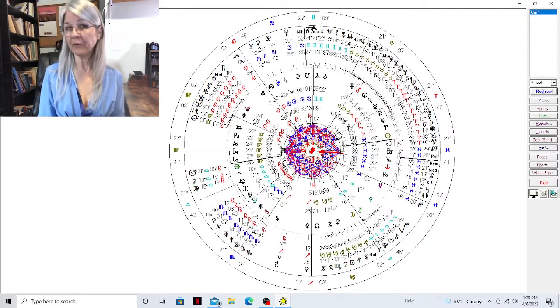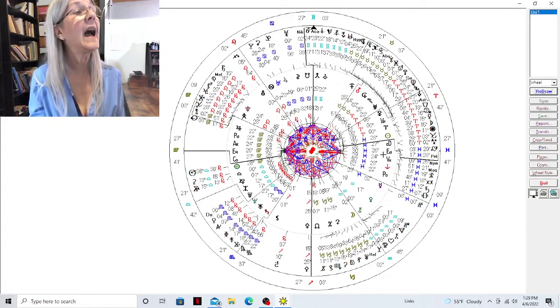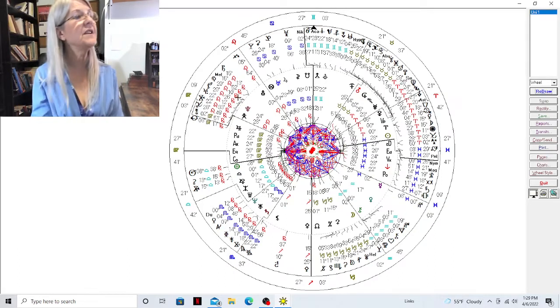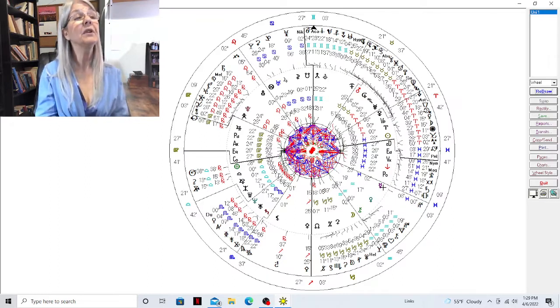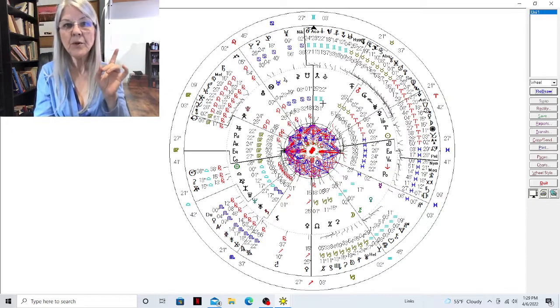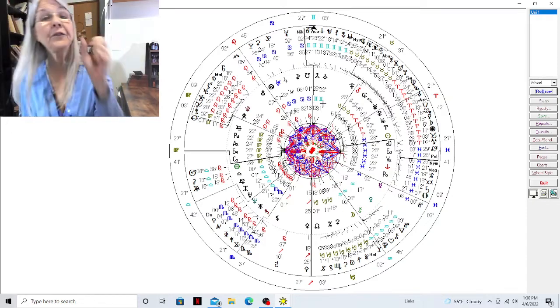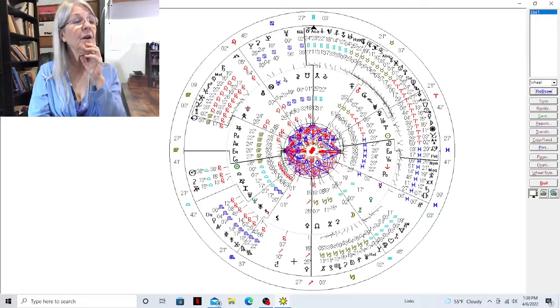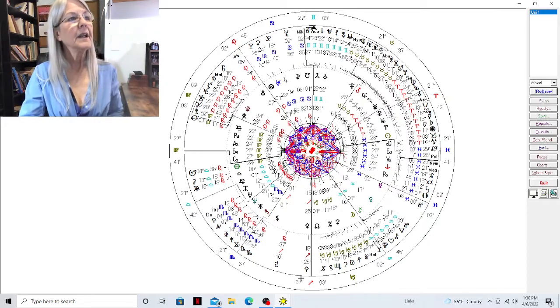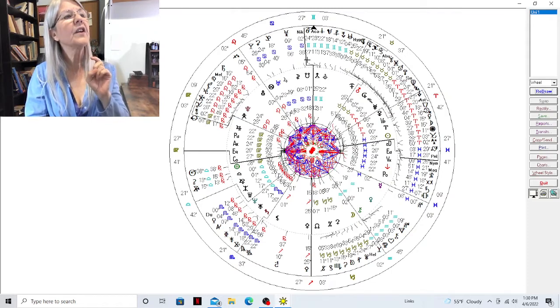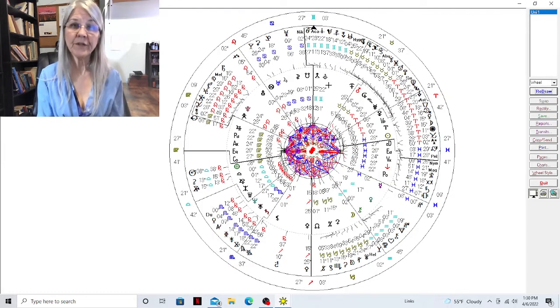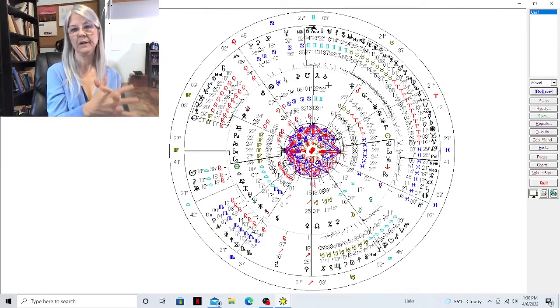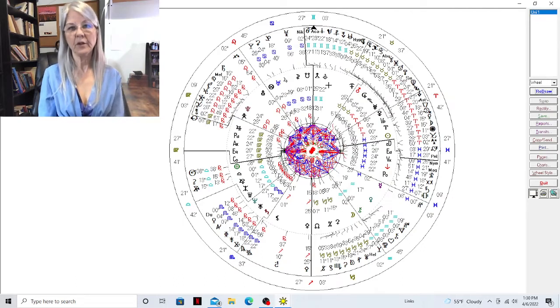Vesta happens to be at 22 degrees. Willis at 22 degrees of Sagittarius sits right across from his work, his career, his goals. So there's something about the head that is in opposition or is affecting somehow the work and the goals. I just thought that was really good.